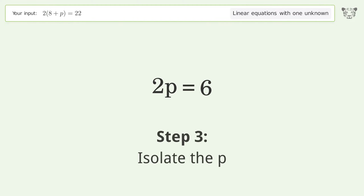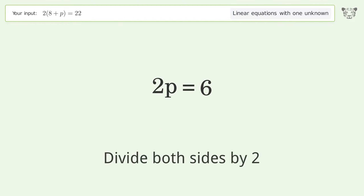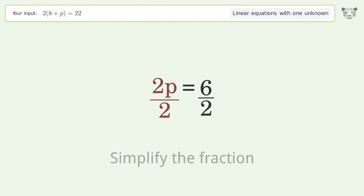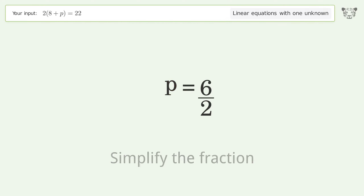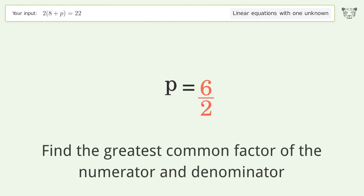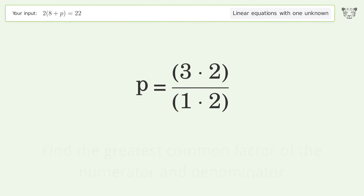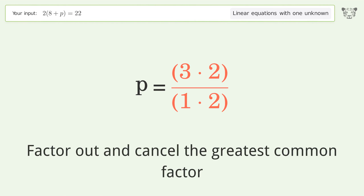Isolate p by dividing both sides by 2, then simplify the fraction. Find the greatest common factor of the numerator and denominator, then factor out and cancel the greatest common factor.